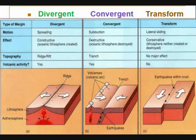Convergent pushes the two plate margins together, causing one side to be lifted, making mountains, and the other to be pushed down into the subduction zone that destroys crust. Transform causes the plate margins to move sideways. This is where you get violent earthquakes, but crust is neither created nor destroyed.